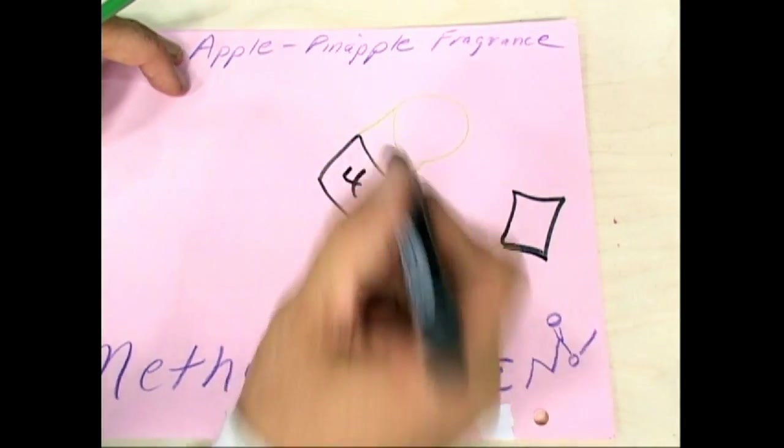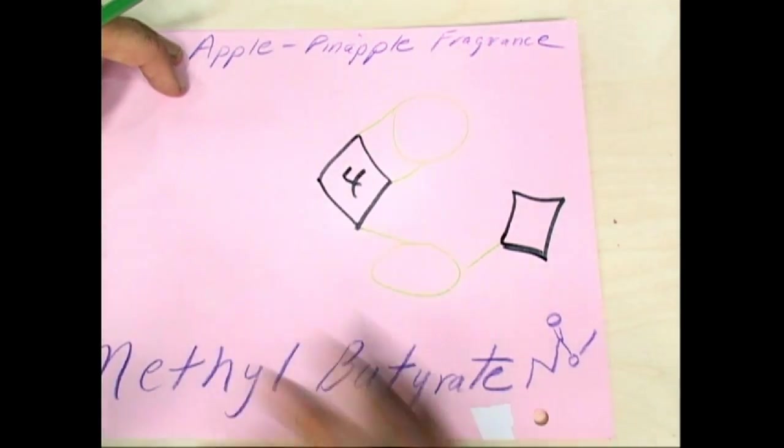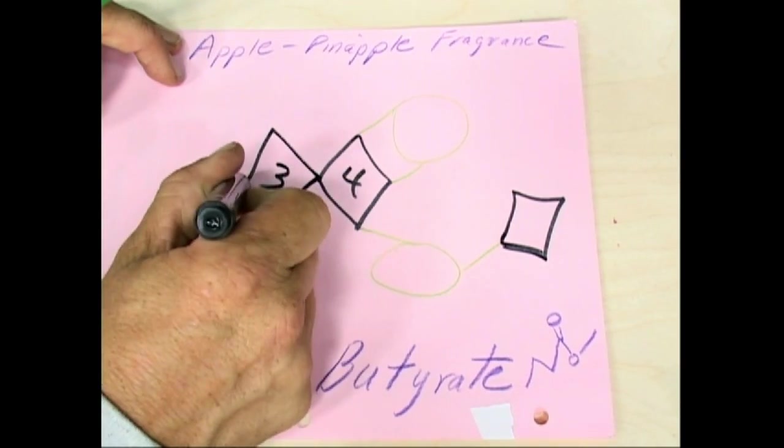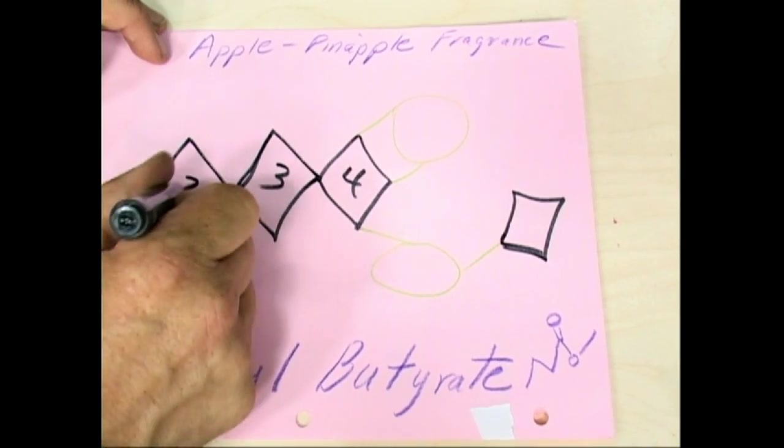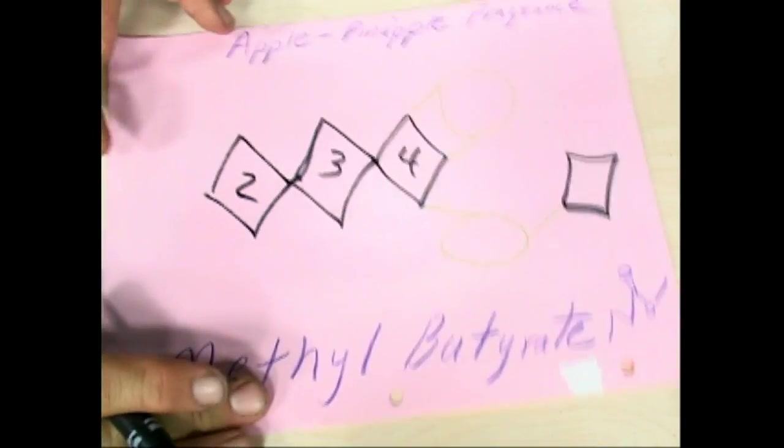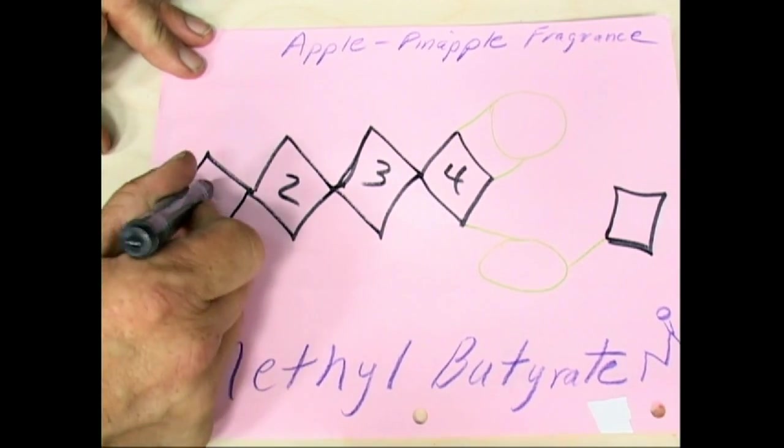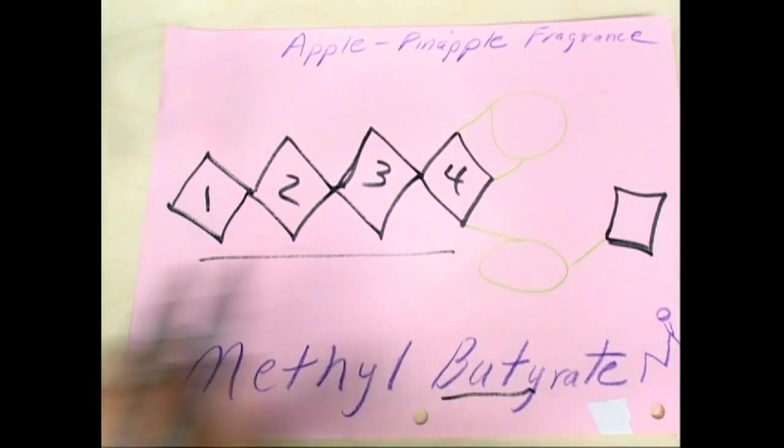Now four, so there's four. We can just go this way since there's straight carbons, right? Three, two, one. Butyrate. Butyrate is the four.